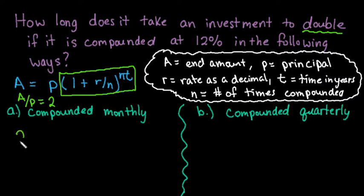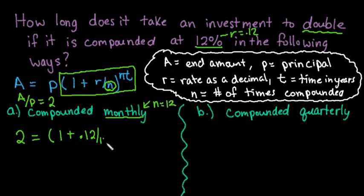We're going to set all of these up in the same way where the ratio of A divided by P is 2. So we would say that 2 equals 1 plus our rate as a decimal. So 12% as a decimal would be 0.12 divided by n, where n represents the number of times per year. Monthly means that n is going to be 12 because there are 12 months in a year. So we would do 1 plus 0.12 divided by 12 to the 12t. That's what we're looking for - we're solving for t.